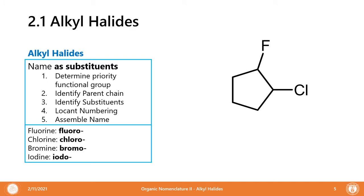How do we name alkyl halides? Take note, before we start naming, that we have unique prefixes for these alkyl halides: fluoro, chloro, bromo, and iodo, each corresponding to the halogen elements. We first determine the priority functional group. In this case, the halides cannot be a functional group, so the alkane is our priority functional group. We have our cyclopentane ring, which forms the basis of our parent chain. The parent name is cyclopentane.